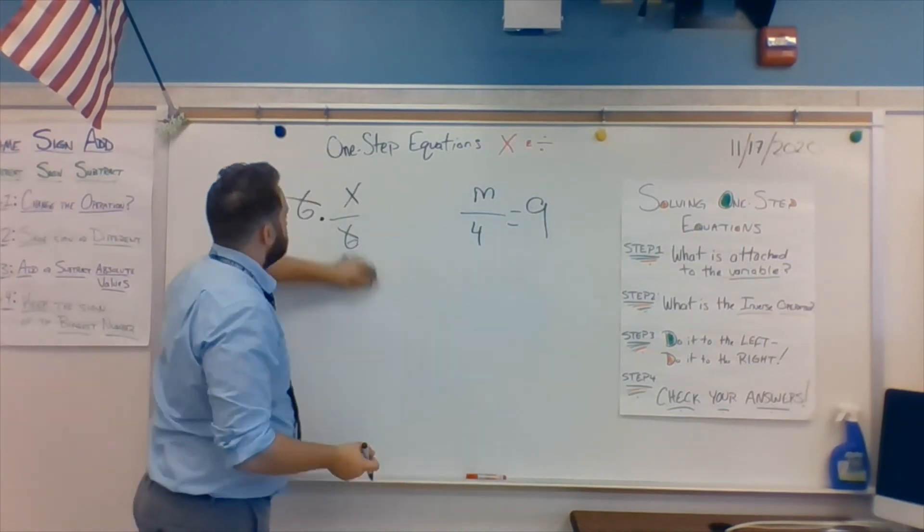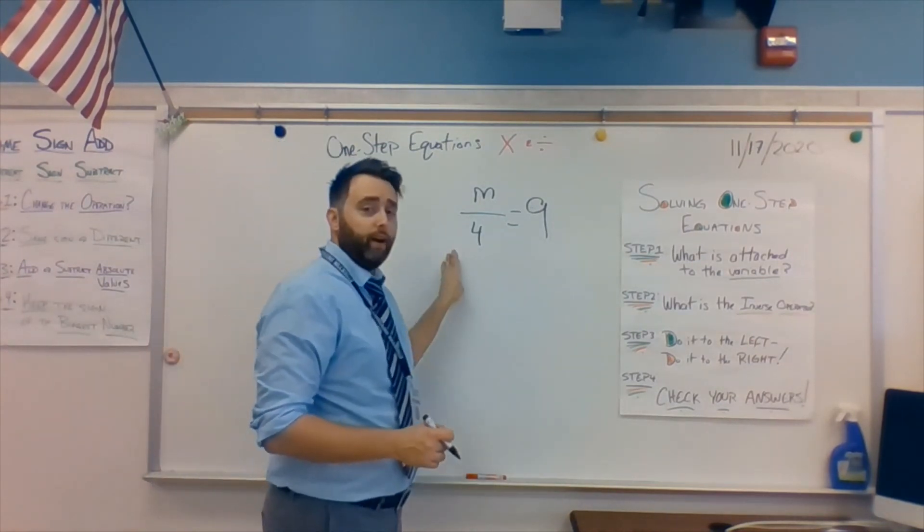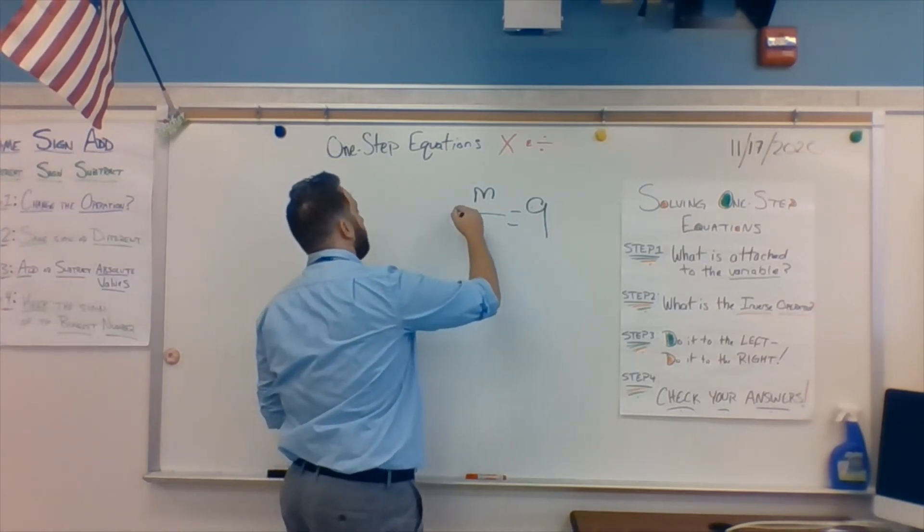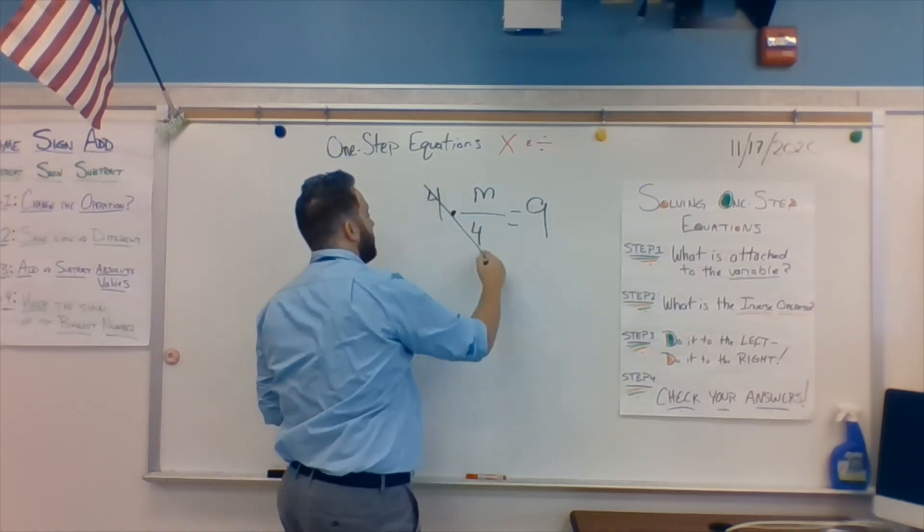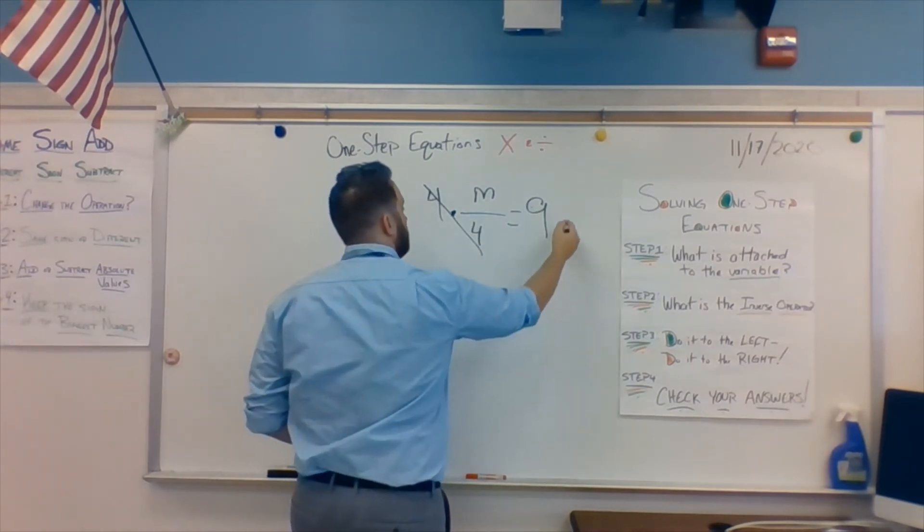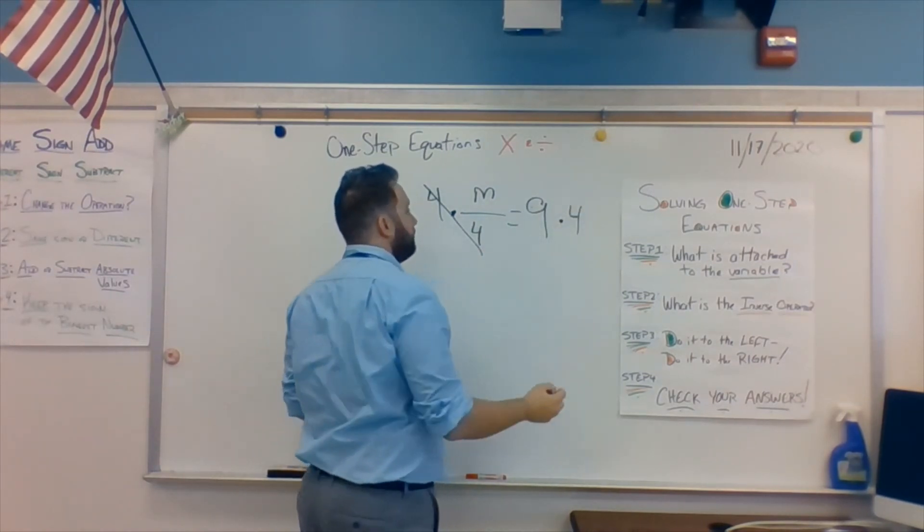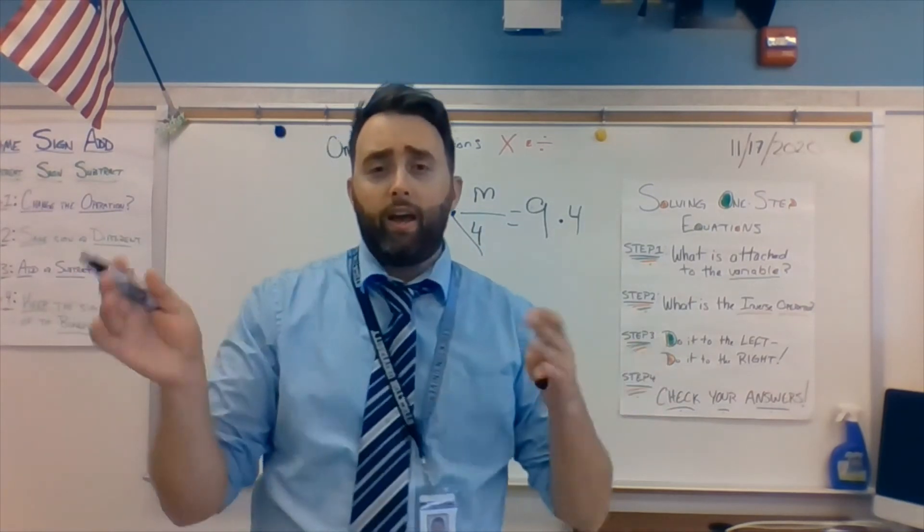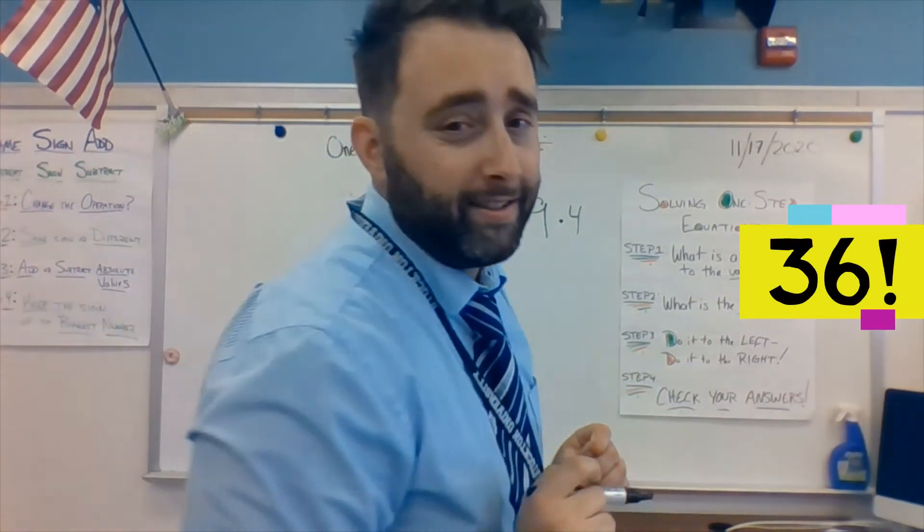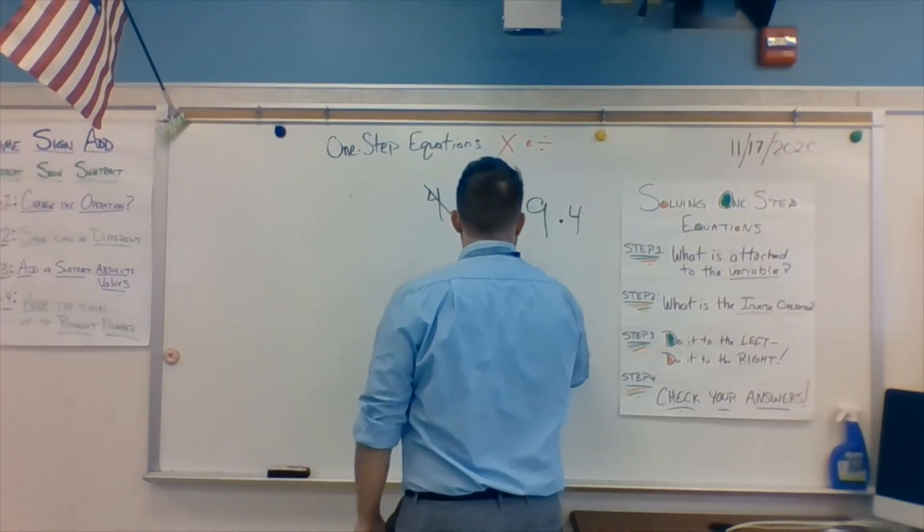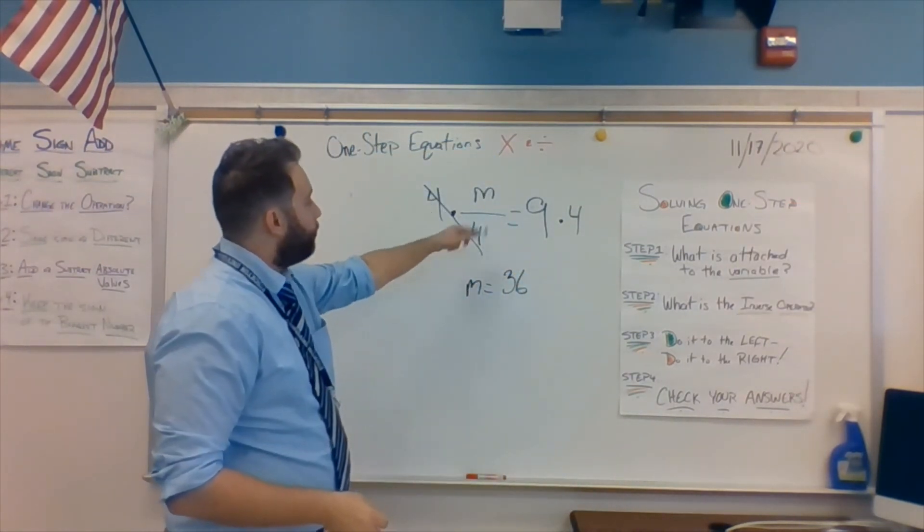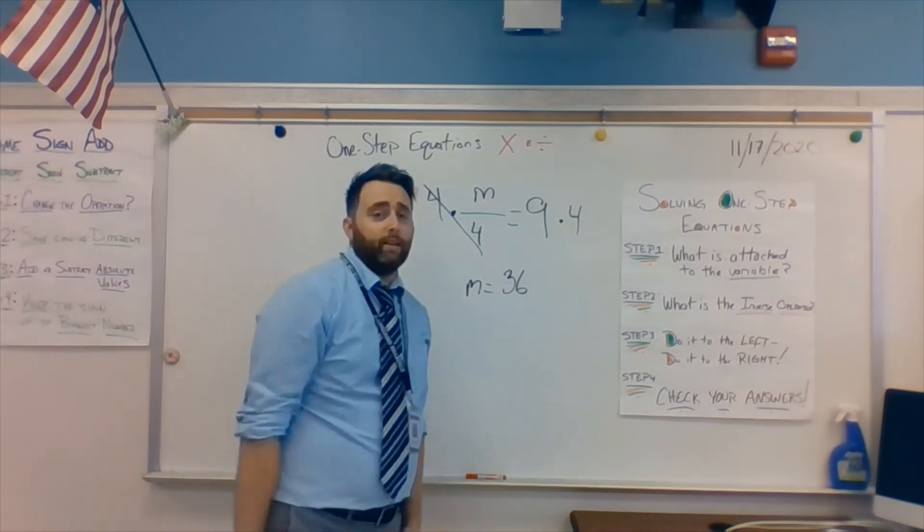Let's work over here. Let's clear out. What's stuck to the variable? A 4. What's the opposite of dividing by 4? Multiplying by 4. That cancels that out. Multiply by 4. M equals 9 times 4. 9 times 4 is 36. Very good. 36. Good. So, 36 divided by 4 indeed is 9. I got the correct answer. Okay.